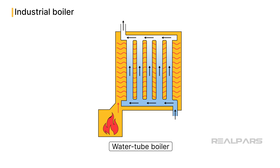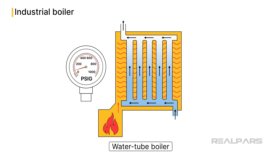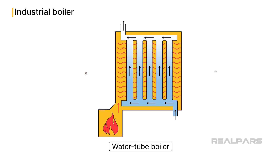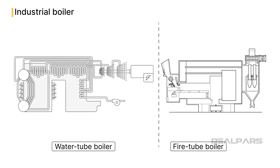In a water tube boiler, it works a bit differently. Water moves through small tubes, and the tubes are heated. As the water heats up, it eventually turns into steam. Due to their design, water tube boilers can handle higher pressures than fire tube boilers, making them ideal for heavy industrial applications. I've shown a simple design of both boilers, but these boilers are commonly used in the industry for various applications and come in different sizes and designs.